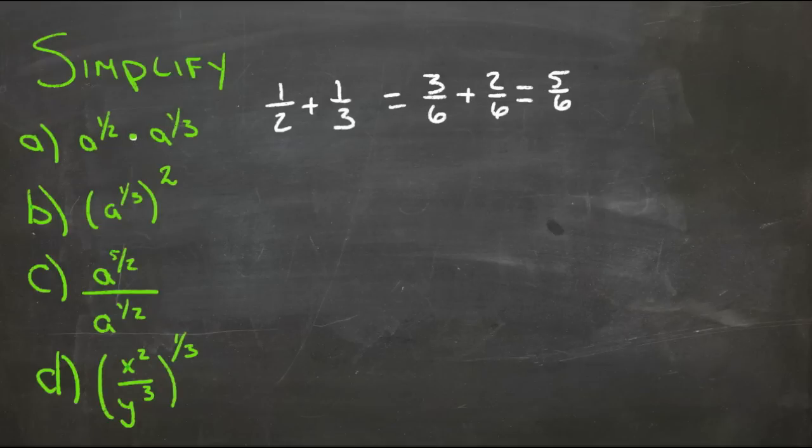Which means that a to the one-half times a to the one-third is a to the five-sixths. For the second one here we're raising a power to a power so we multiply, so we just need to take one-third times two which means we get a to the power of two-thirds.